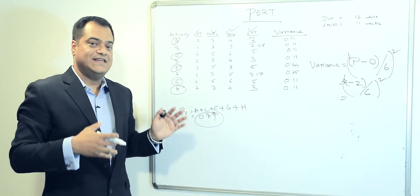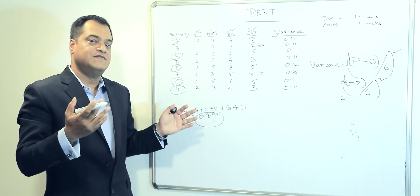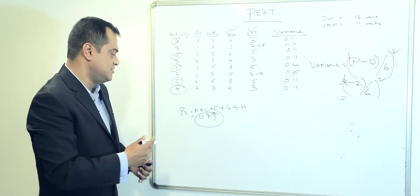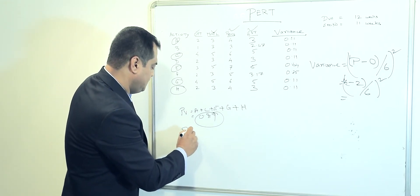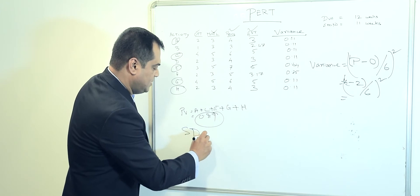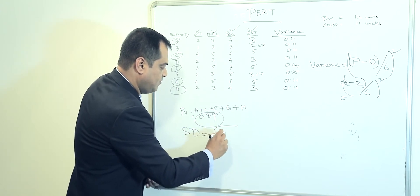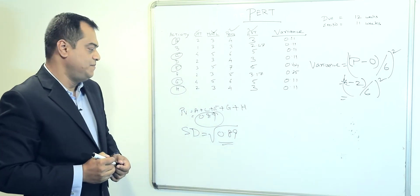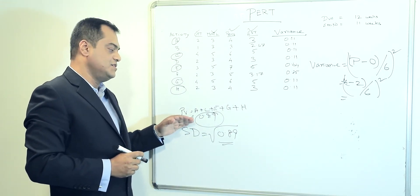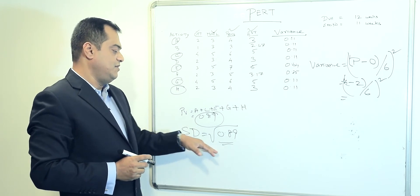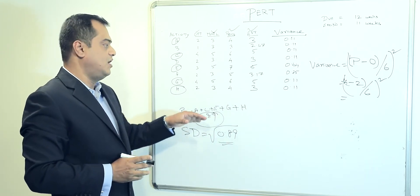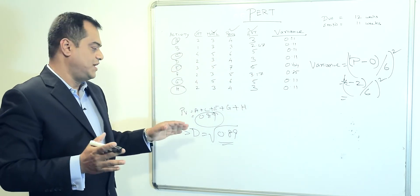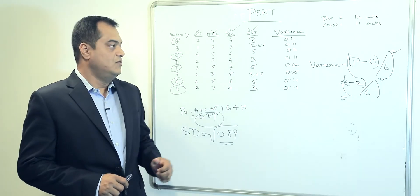Once we have the project variance, we calculate the standard deviation. The standard deviation is the square root of 0.89. This tells us the overall deviation that can be allowed in the project, looking at all the estimates and variances put together.